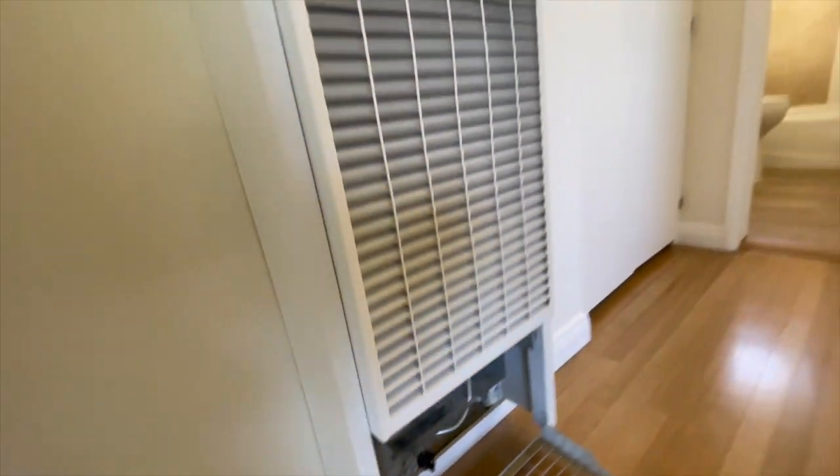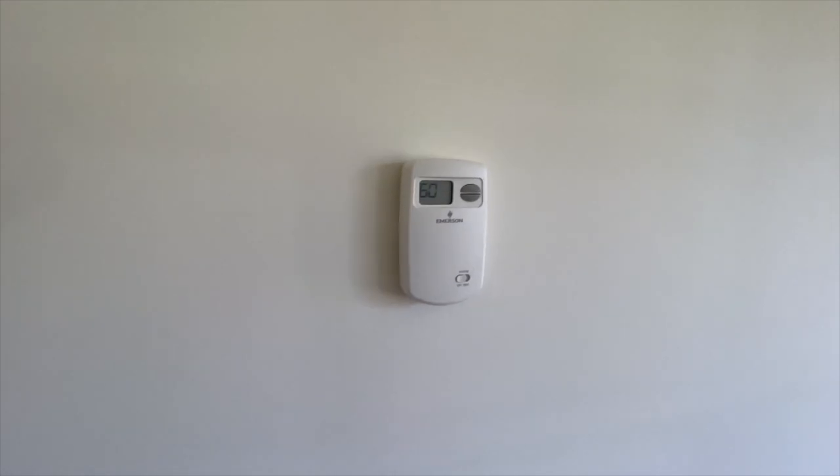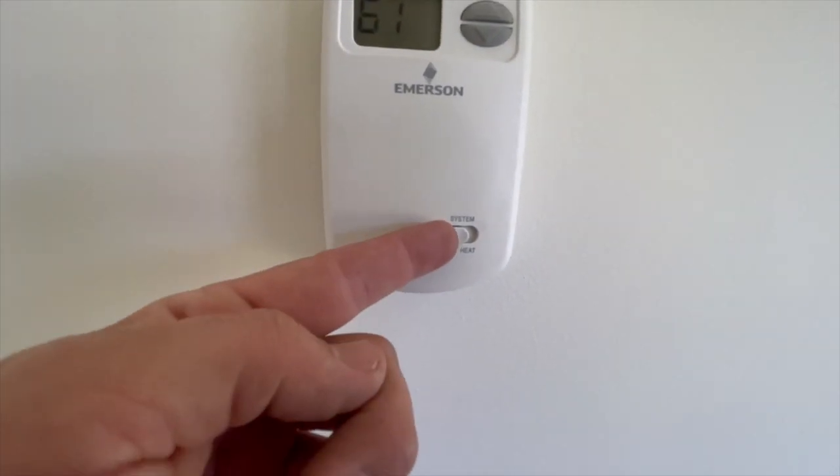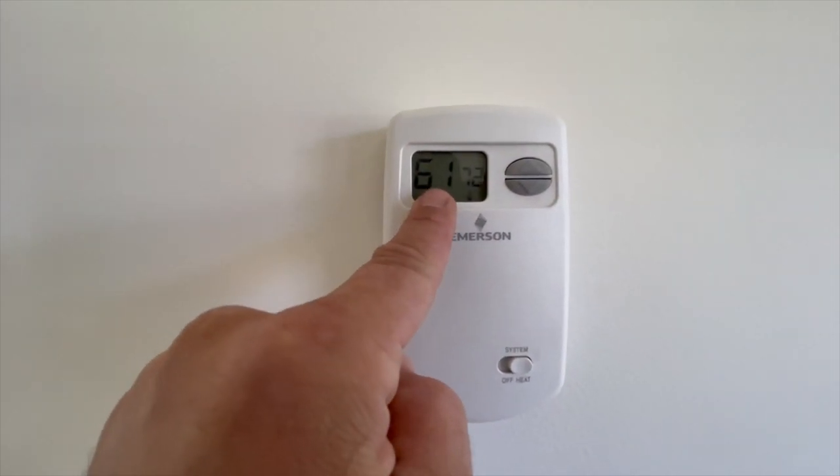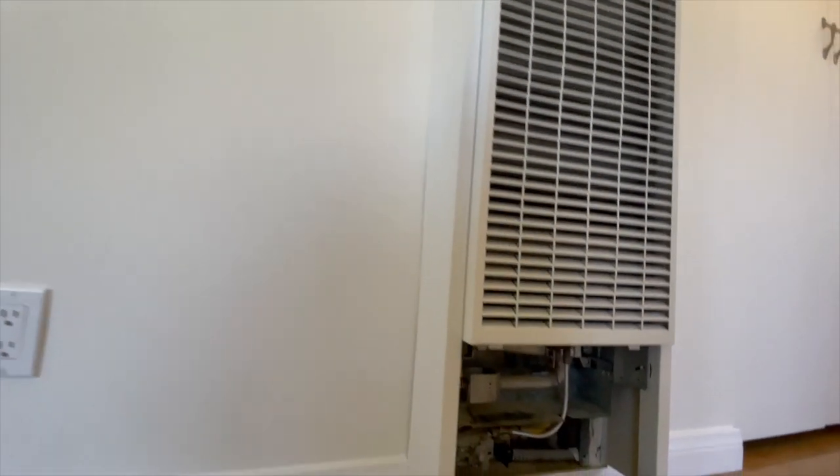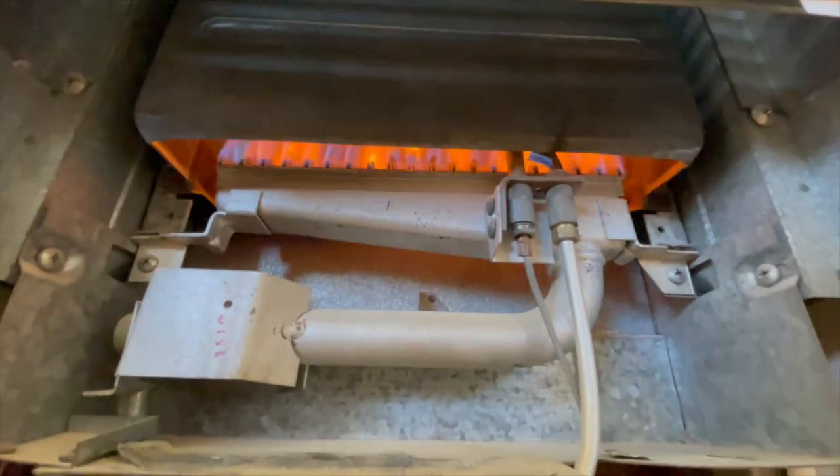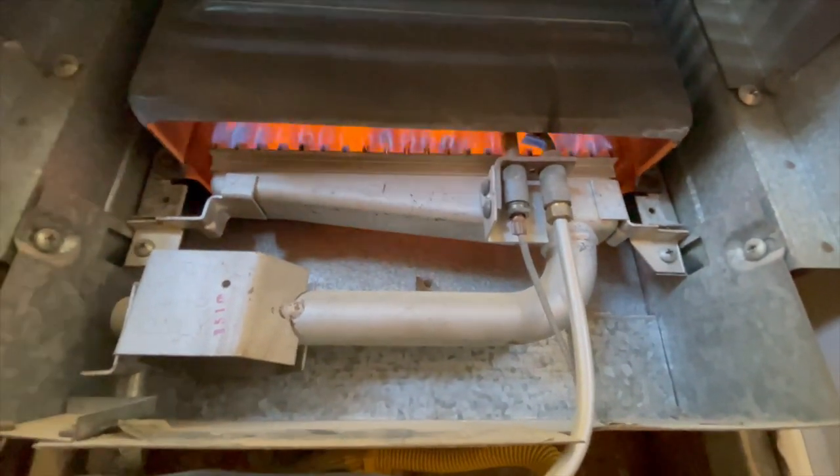Now we'll go over to the wall thermostat, and I have a digital one in this case. We'll put heat. We'll make sure that the temperature is above how hot it is in the room. And right there, it fired up, and now we have heat from our wall heater.